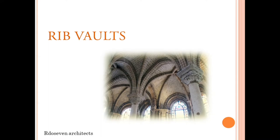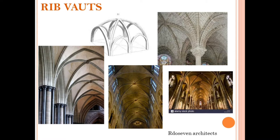Rib vault. The Gothic rib vault was one of the essential elements that made possible the great height and large windows of the Gothic style. It was made of diagonal crossing arched ribs, which directed the thrust outward to the corners of the vault and downward via slender colonettes and bulging columns to the pillars and columns below. Basically, ribs supported the structure and distributed the load to the columns.